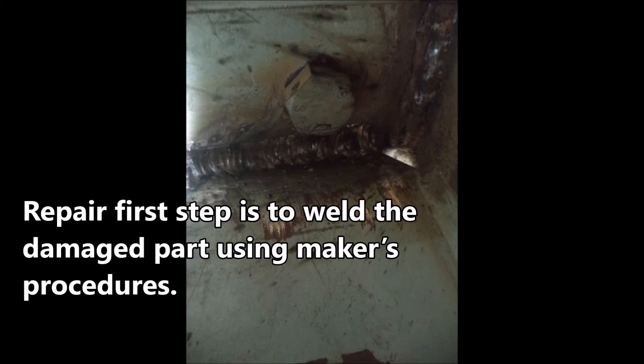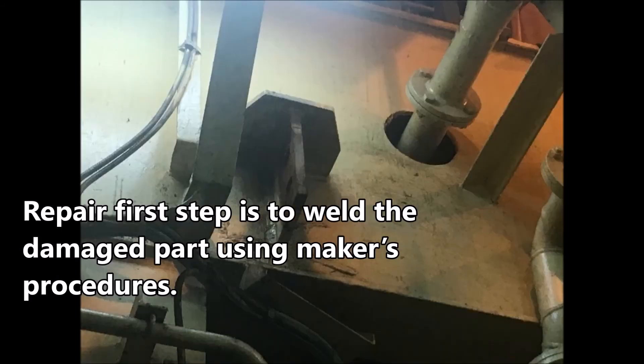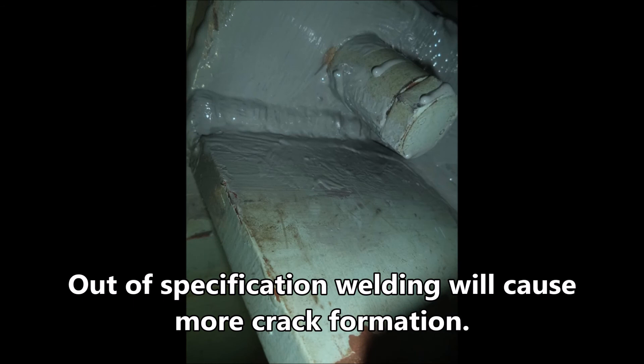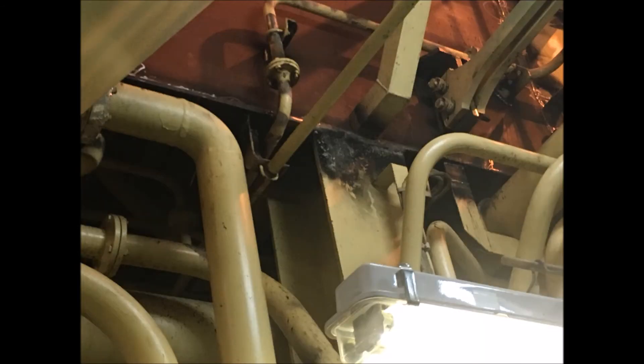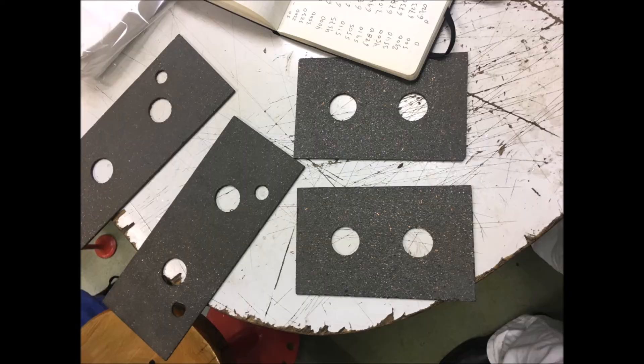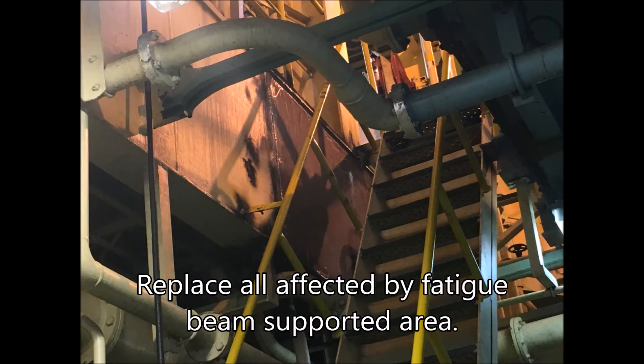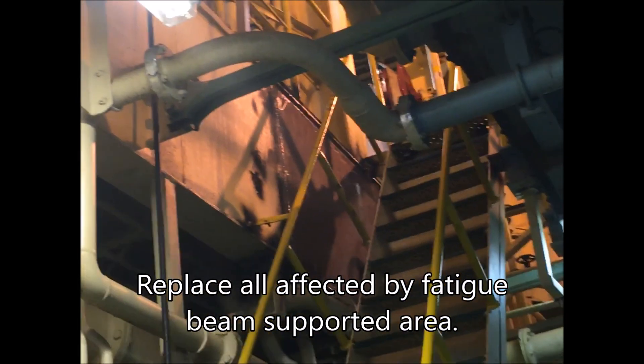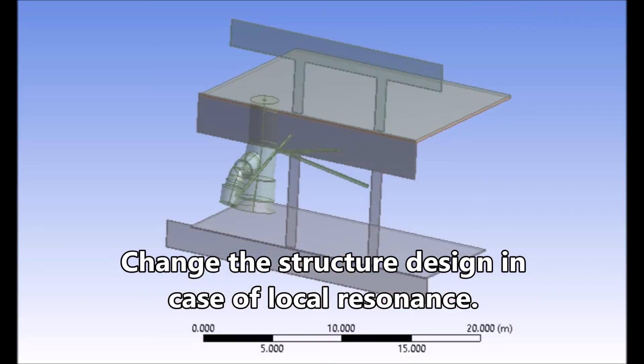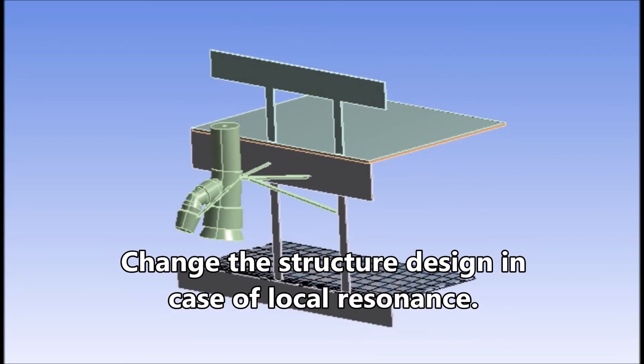Repair first step is to weld the damaged part using maker's procedures. Out of specification welding will cause more crack formation. Replace the pads with new ones with the correct hardness and friction coefficient. Replace all affected by fatigue beam supported areas. Change the structure design in case of local resonance.